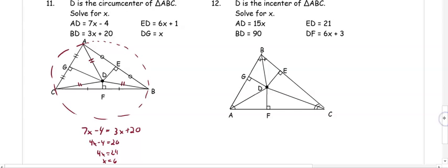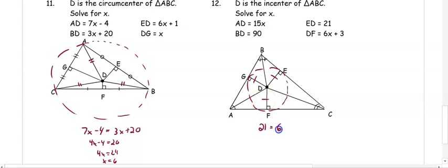In number twelve, the incenter means the point is inside the circle and is equidistant from the sides. So ED equals DF: 21 equals 6X plus 3, giving 6X equals 18, so X equals 3.